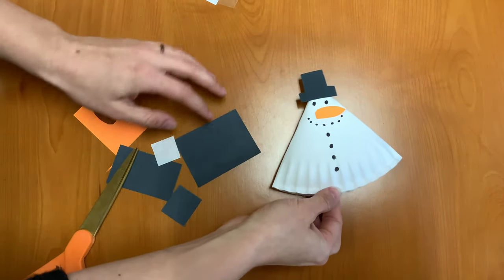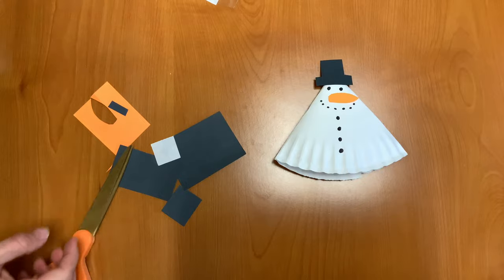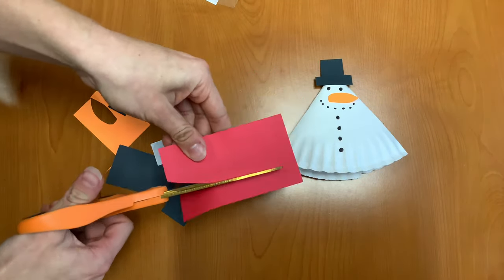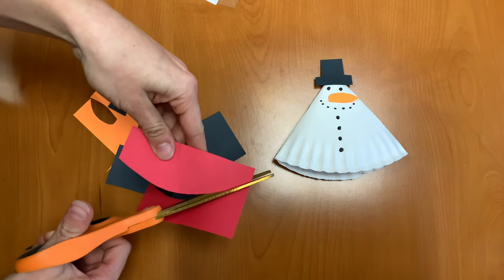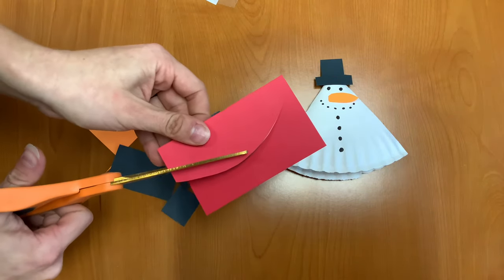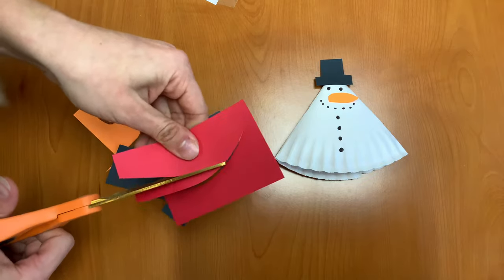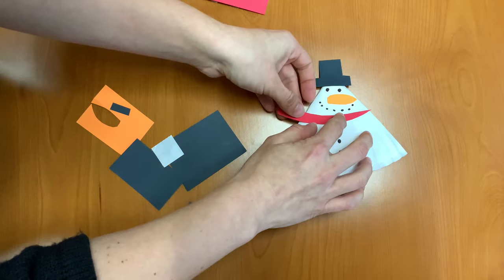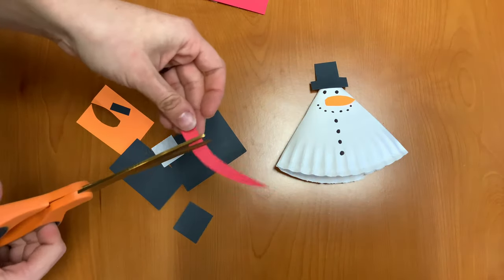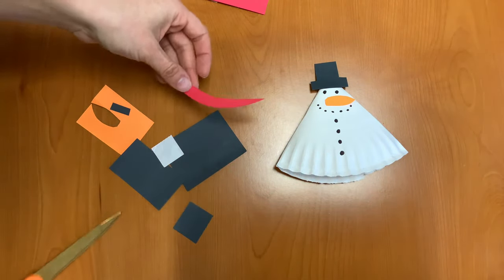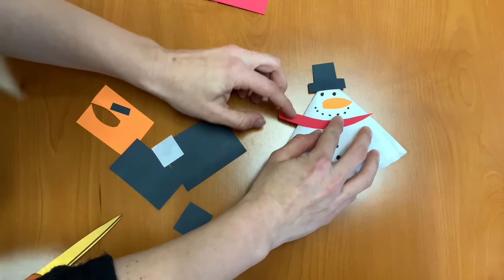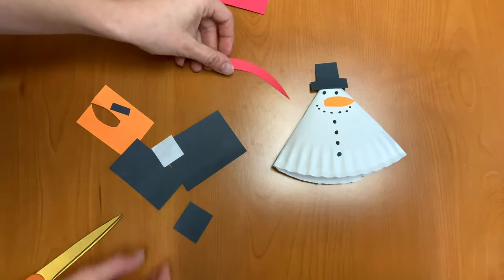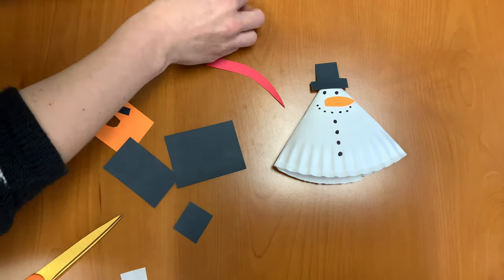Our snowman is almost done. Our last step is to cut out a scarf for him. So I'm just going to cut kind of a rounded shape here. And we'll see where that fits. Actually, I'm going to leave that little bit on so it looks like he has a little bit of scarf flying off of him. And now we're going to attach this with the last glue dot.